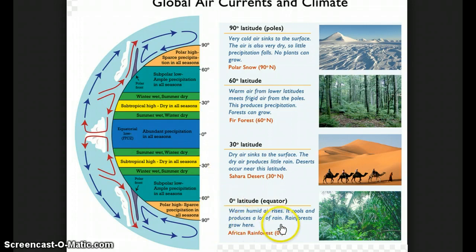So at the equator, where that warm, humid air is constantly rising, we get a lot of rainforests. For example, the African rainforest and also the Amazon rainforest are both at the equator.